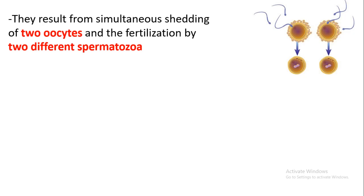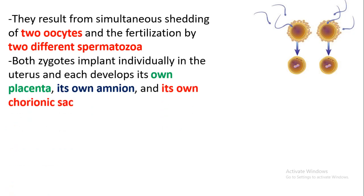Since two oocytes have been fertilized by two different sperm, each individual embryo in dizygotic twins develops in a different placenta, a different amnion cavity, and a different chorionic sac. This means these twins develop in different regions, each with their own placenta, amnion, and chorionic sac.